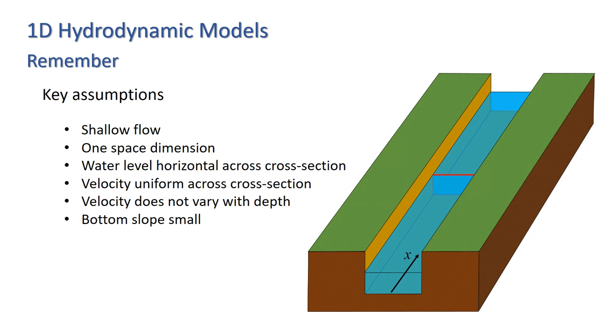None of these downsides preclude using 1D hydrodynamic models and getting useful results from them. However, if you do use them, it's always worth keeping in mind the assumptions that are embedded within them and the effect these may have on your results. In particular, bear in mind the key assumptions. The water is shallow. It is one dimensional spatially. The water level across the cross section is horizontal. The velocity is uniform across the cross section and doesn't vary with depth. And the bottom slope is small. Happy modelling.